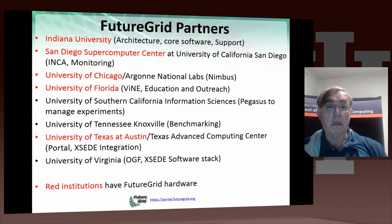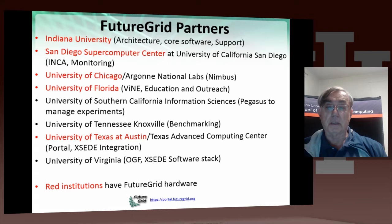FutureGrid has a great set of partners. It is led by Indiana University, which has substantial hardware and is responsible for the architecture, the core software, and a lot of the support. San Diego has hardware — two clusters, Lima and Sierra — and its main focus is Inca and the monitoring and performance capabilities. The University of Chicago and Argonne National Labs have the cluster Hotel, and their focus is support of Nimbus. University of Florida is in charge of education and outreach, has the virtual networking software Vine, and also develops many of the appliances.